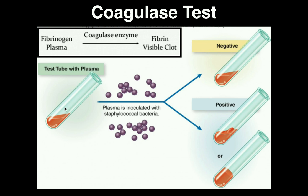However, if we took the same test tube but with Staphylococcus aureus and added plasma, we could get one of two results. If there is a lot of coagulase present, the entire fluid in the tube may solidify, as you see here on the bottom. But more commonly, you'll see clumps that form within the fluid. Both of these are considered positive results. The complete solidification or visible clumping occurs because you're forming a clot — forming fibrin — as the bacterial coagulase converts fibrinogen into fibrin.